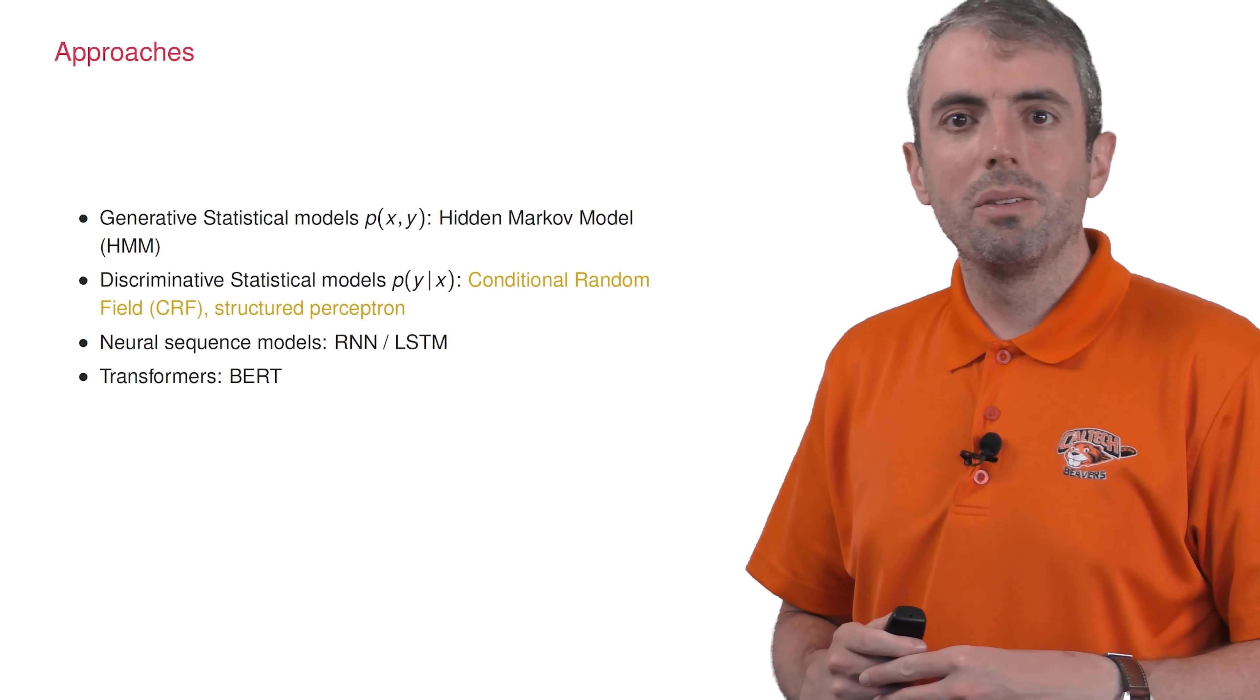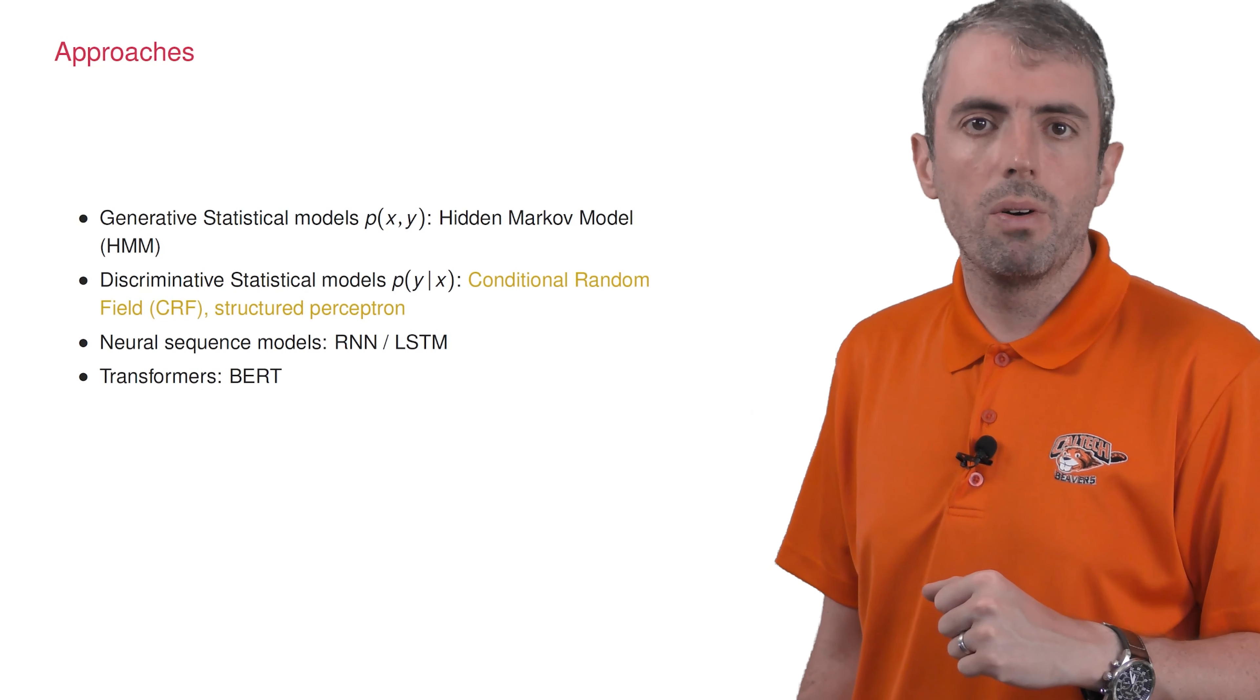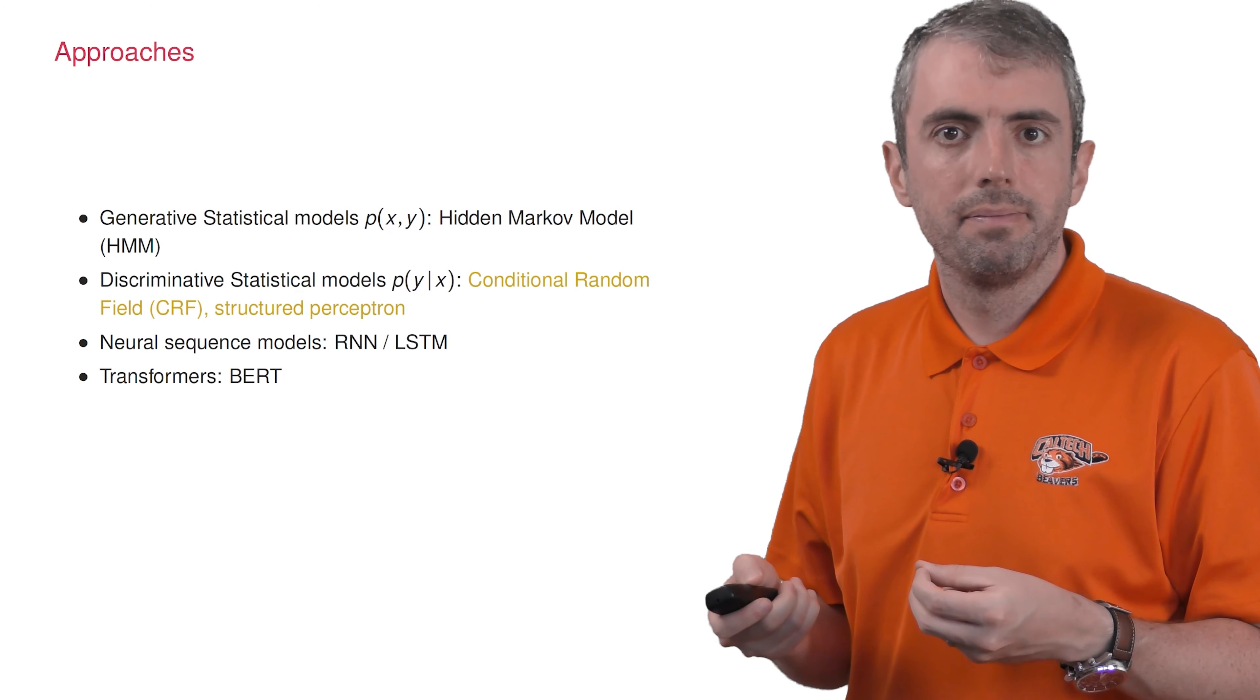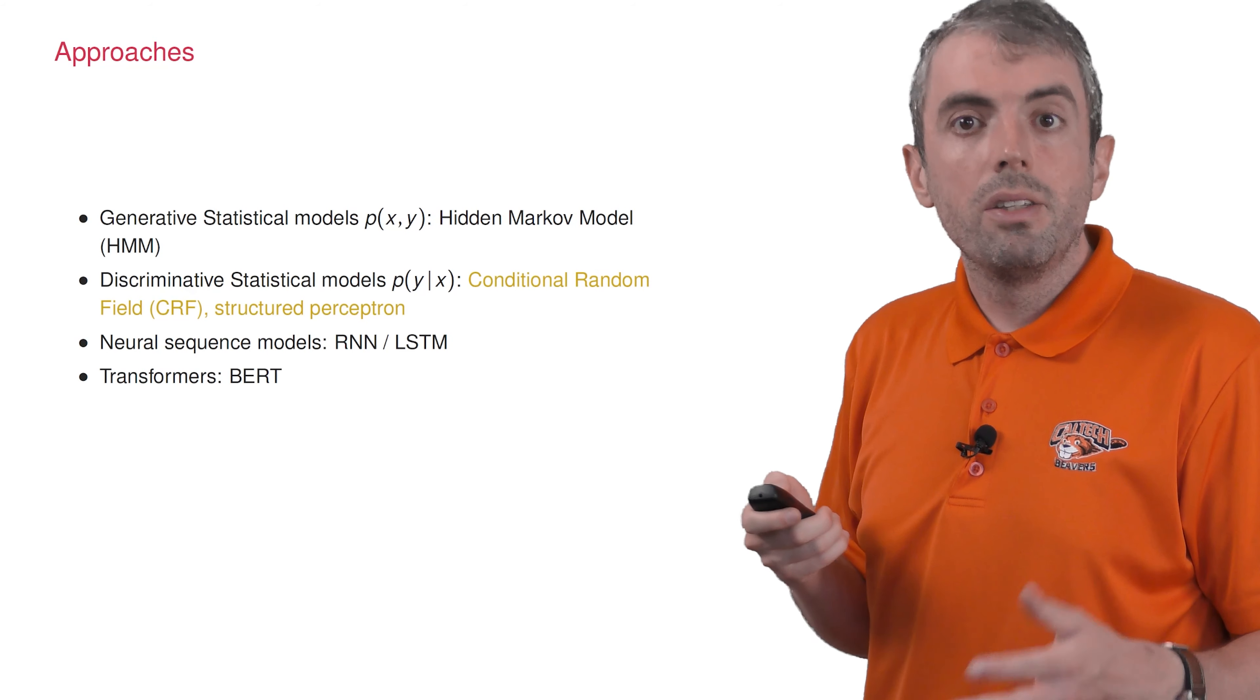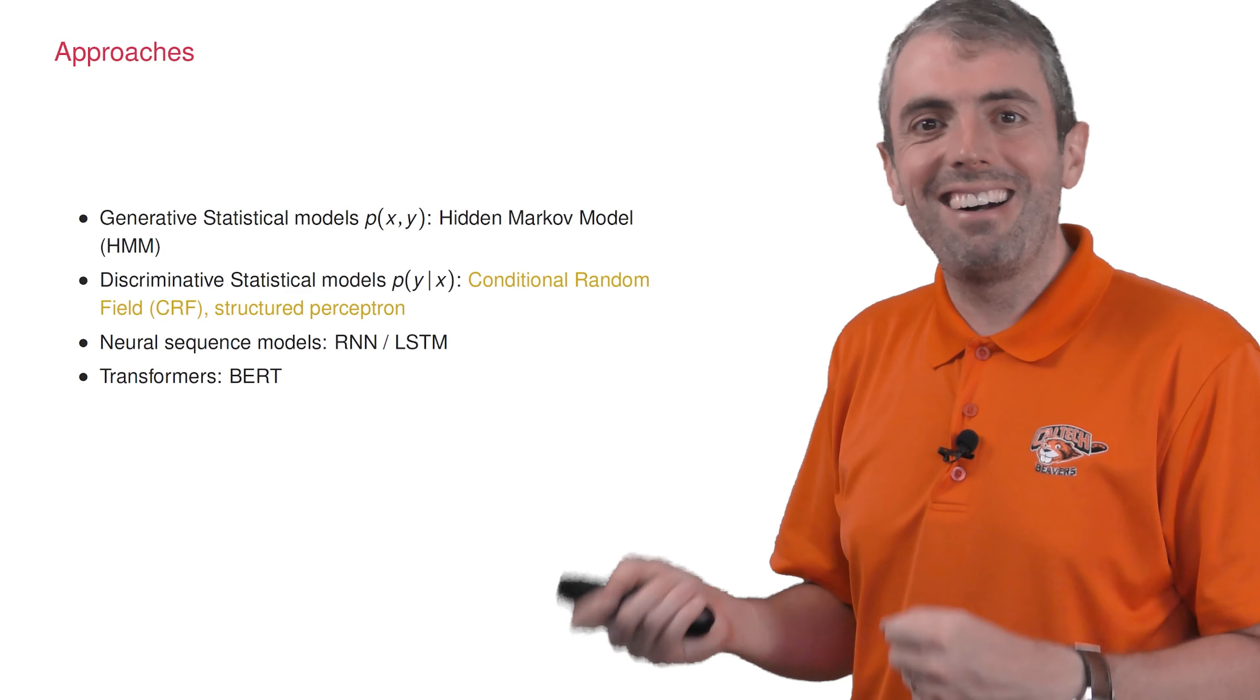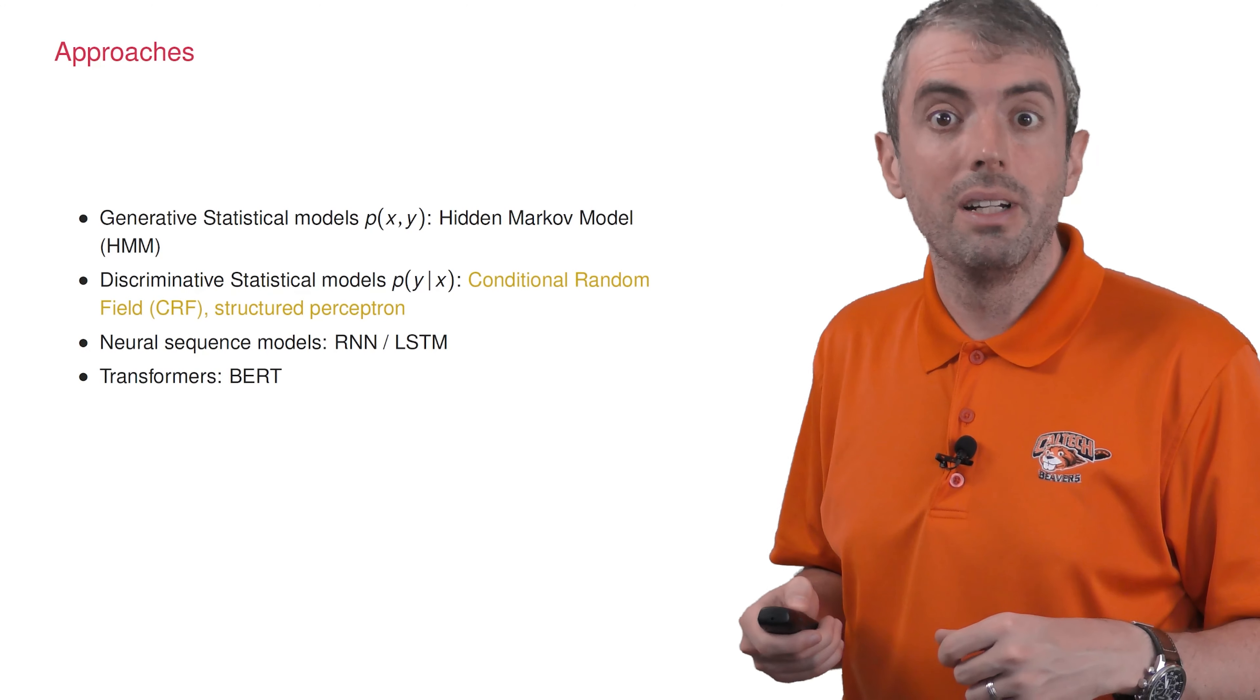Slightly more recent models are conditional random fields and the structured perceptron. These are mathematically much like logistic regression for sequence problems. You define features and optimize the probability of the correct part of speech token, where the probability is a function of the dot product of a weight vector and a feature vector extracted from the underlying tag set and the input sentence. For each of these three older models - the Hidden Markov Model, conditional random fields, and the structured perceptron - you need an algorithm to search through all of the possible tag sequences efficiently. It's a beautiful dynamic programming algorithm. And this is why I still teach these algorithms in my graduate classes, because this way of thinking, even if you're not using specifically these models, is useful for understanding other computational problems that you'll likely run into when you're dealing with language.